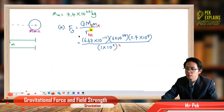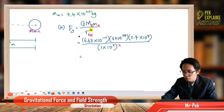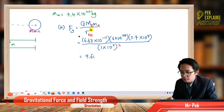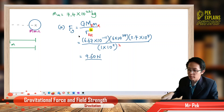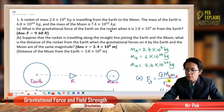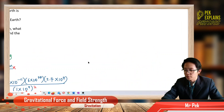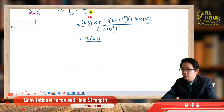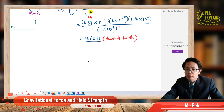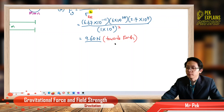The answer is 9.60 Newton. Now, what's the direction? You need to give direction also, because the force of the Earth on the rocket means it attracts towards Earth. So write 'towards Earth.' You need to write the direction — towards Earth, to the left.